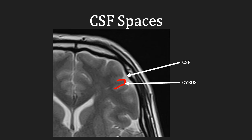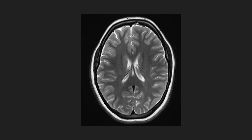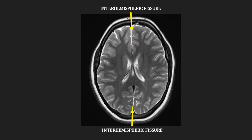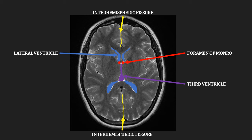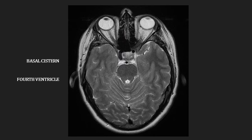In between the folds of brain, or gyri (plural for gyrus), are CSF-filled spaces called sulci (plural for sulcus). Taking a closer look at the CSF spaces in the brain, the interhemispheric fissure in yellow separates the two hemispheres, and the lateral ventricles are paired spaces on either side of the brain, represented in blue. The lateral ventricles communicate with the purple third ventricle via the foramen of Monro. The sylvian fissures, highlighted here in orange, separate the frontal and temporal lobes. CSF in the basal cisterns, highlighted in green, surrounds the brain stem, and the fourth ventricle, shown in dark red, communicates with the third ventricle.